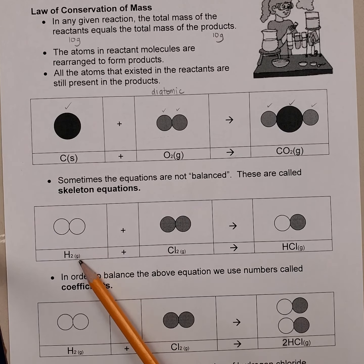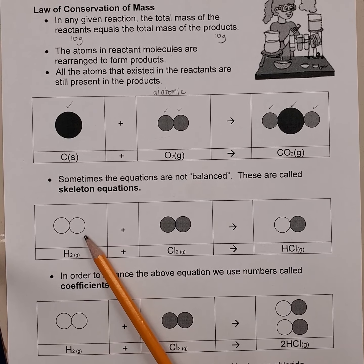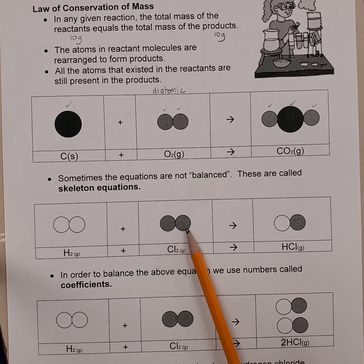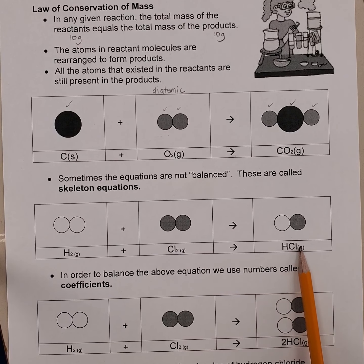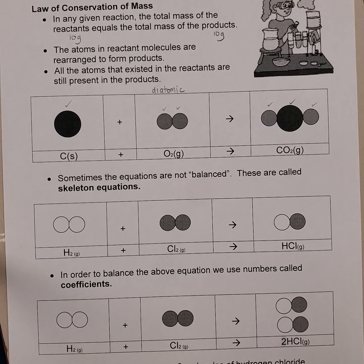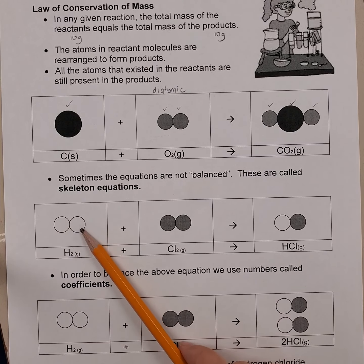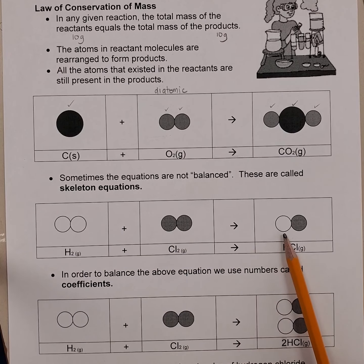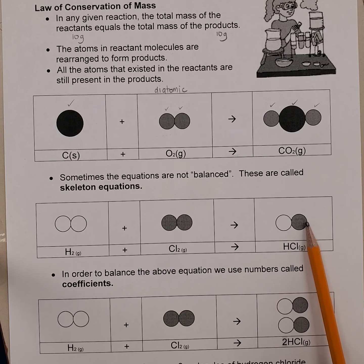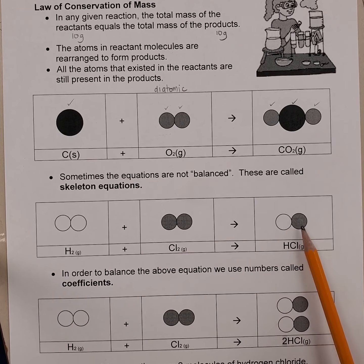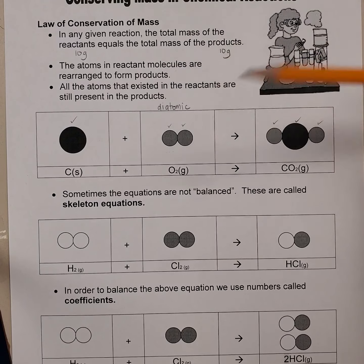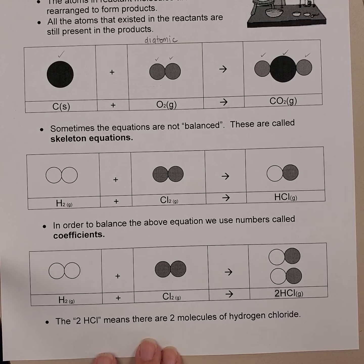In this equation, we have hydrogen gas — hydrogen is a diatomic element — and it is reacting with a molecule of chlorine gas, which is also diatomic. When they react, they form a gas called hydrogen chloride. But when I look at my atoms, I notice something is not balanced. I have two hydrogens on my reactant side but only one hydrogen on my product side. I have two chlorine atoms on my reactant side but only one chlorine on my product side. It's not that one hydrogen and one chlorine disappeared — according to the law, the atoms can be rearranged, but they have to still exist on the product side. So my drawing needs an addition.